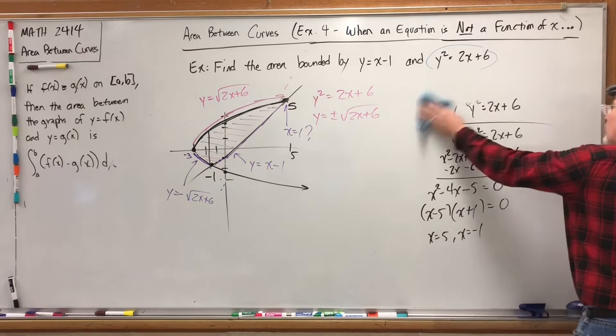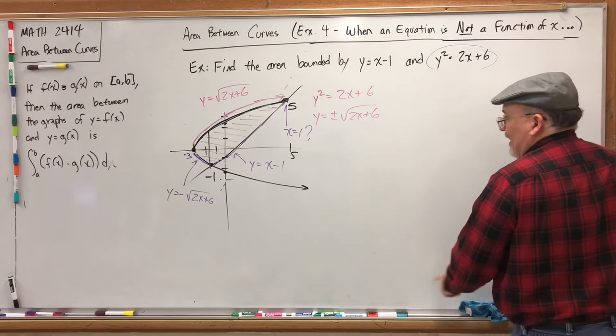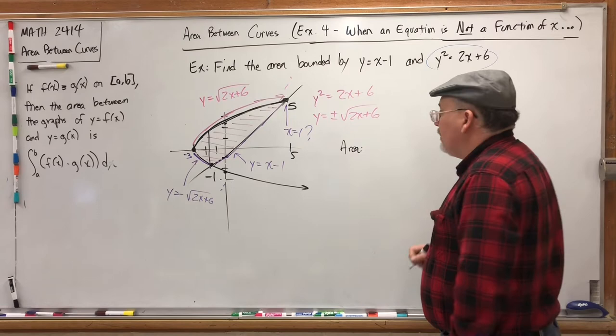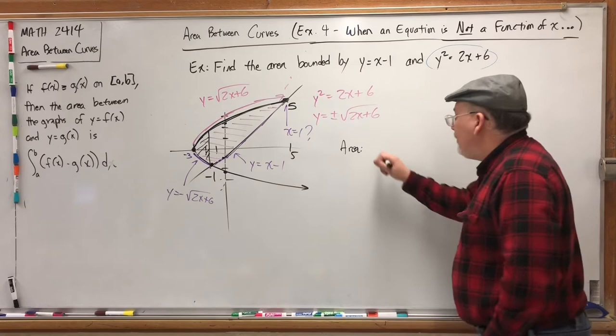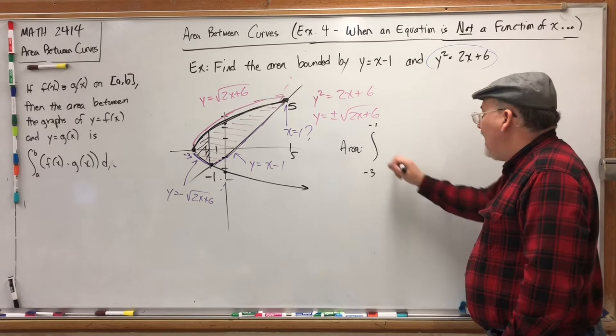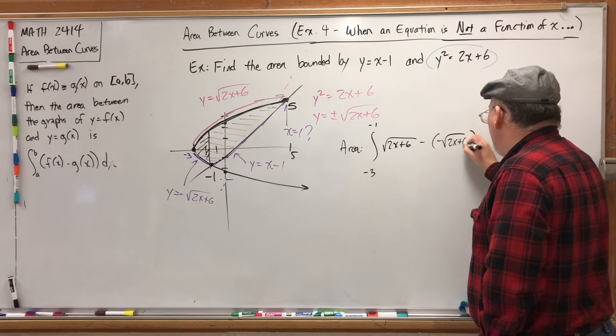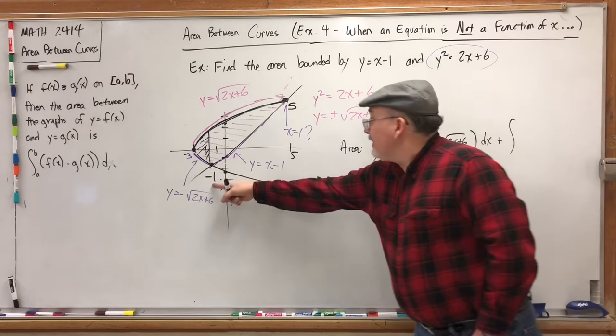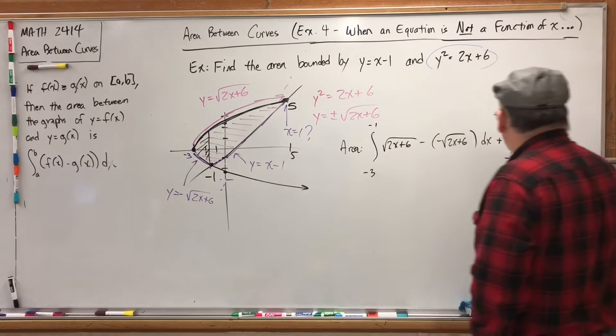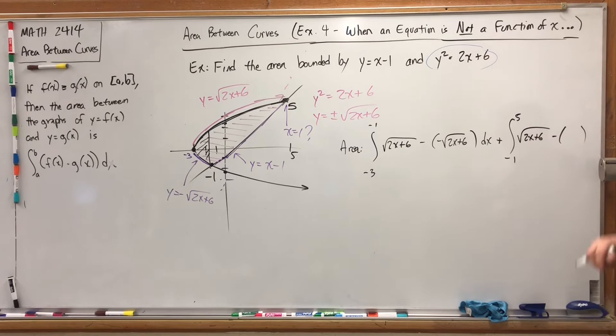Okay, so we've got our intersection points. We know who's on top, we know who's on bottom, and fortunately the bottom switches at negative 1, switches from the parabola to the line, but we're ready to set up the area. The area on the left side, right here, is the top. Well, first off, it's the integral from negative 3 to negative 1. Of the top, which is the square root of 2x plus 6, minus the bottom, but over here the bottom is negative square root of 2x plus 6. Plus the integral from negative 1 to 5 of the square root of 2x plus 6, minus the bottom, but the bottom is the line, the bottom is y equals x minus 1 dx.